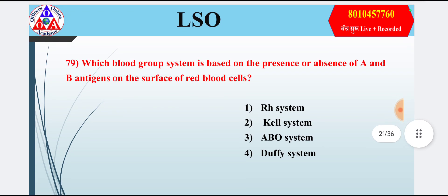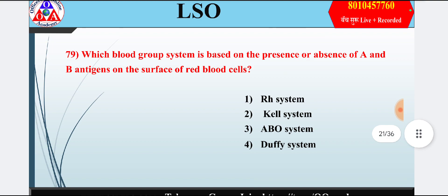Question 19: Which blood group system is based on the presence or absence of A and B antigens on the surface of red blood cells? Option 1: Rh system; option 2: Kell system; option 3: ABO system; option 4: Duffy system. Answer is option 3 — ABO system.